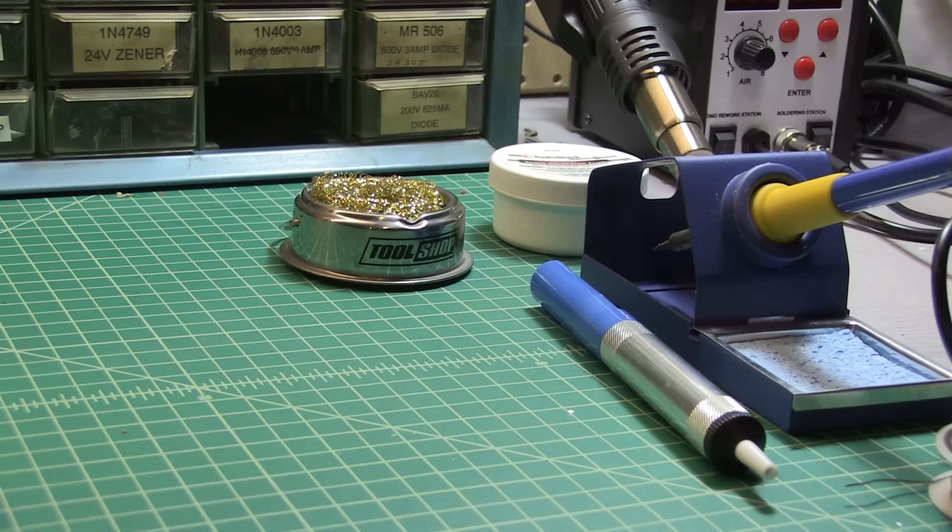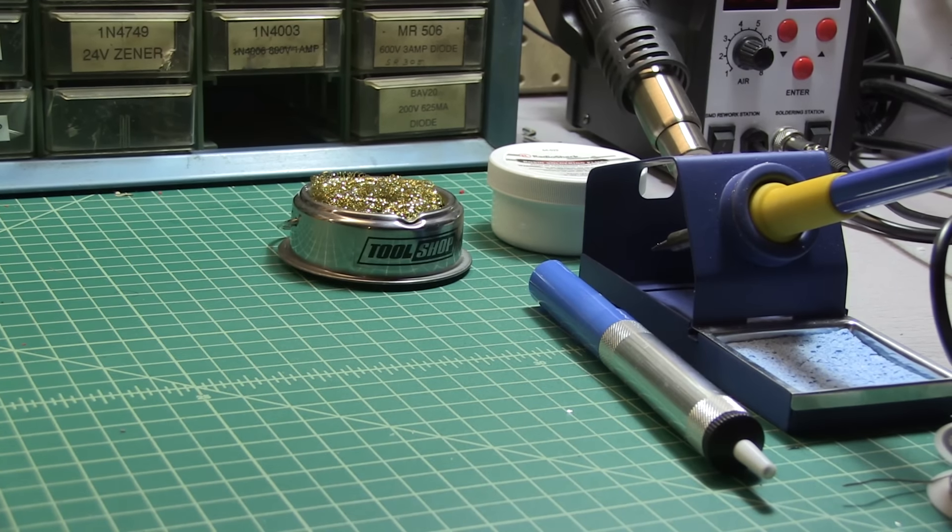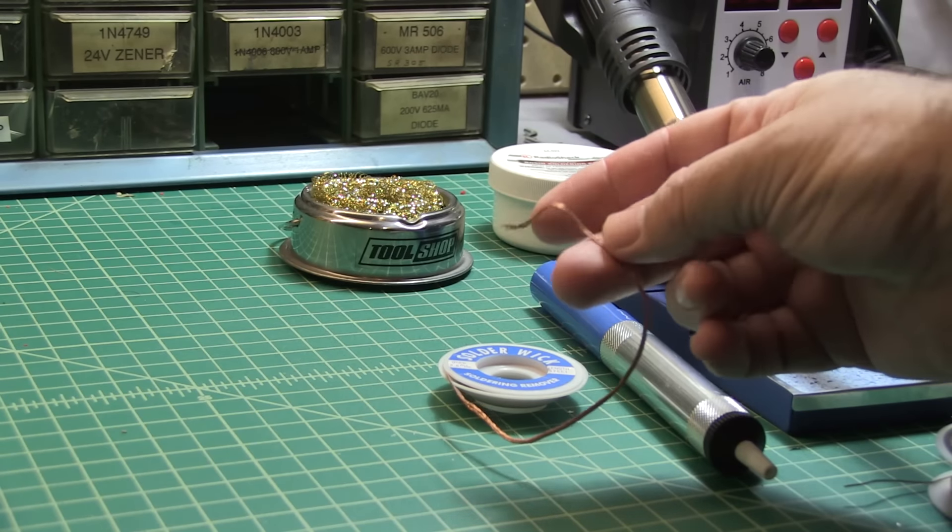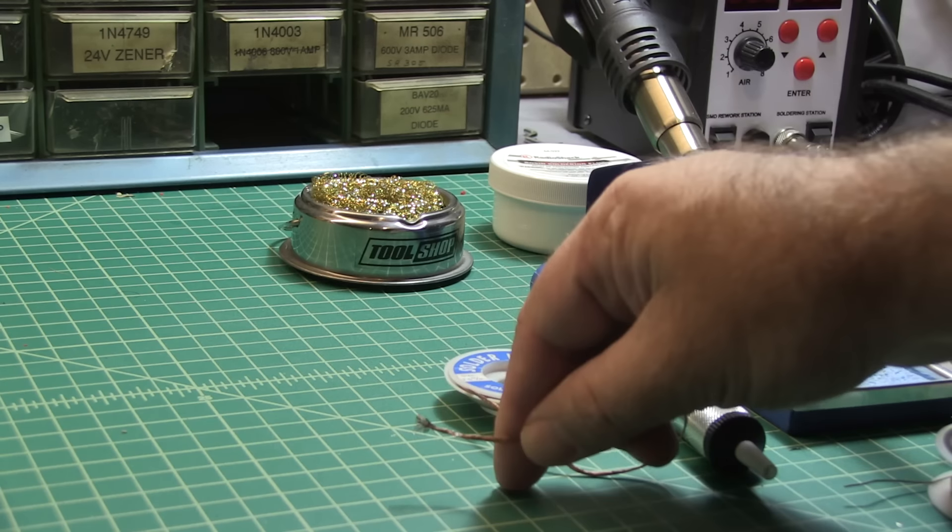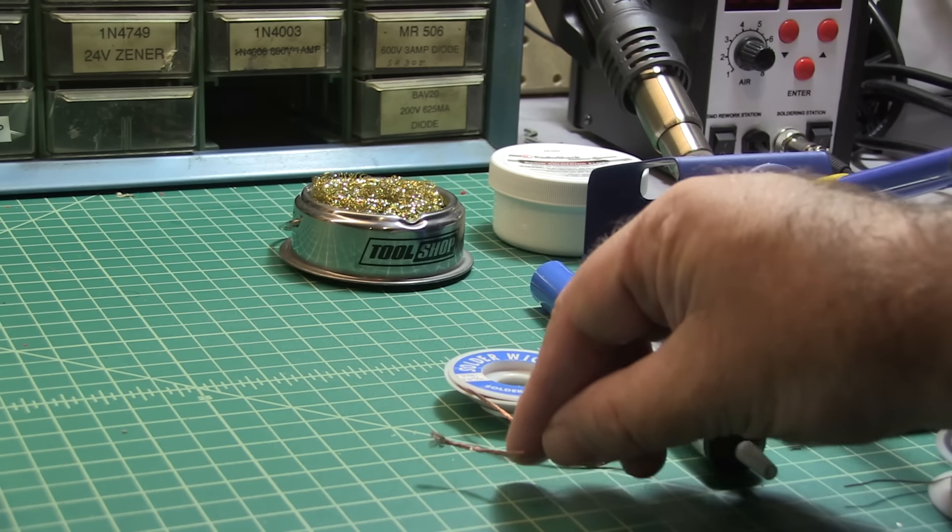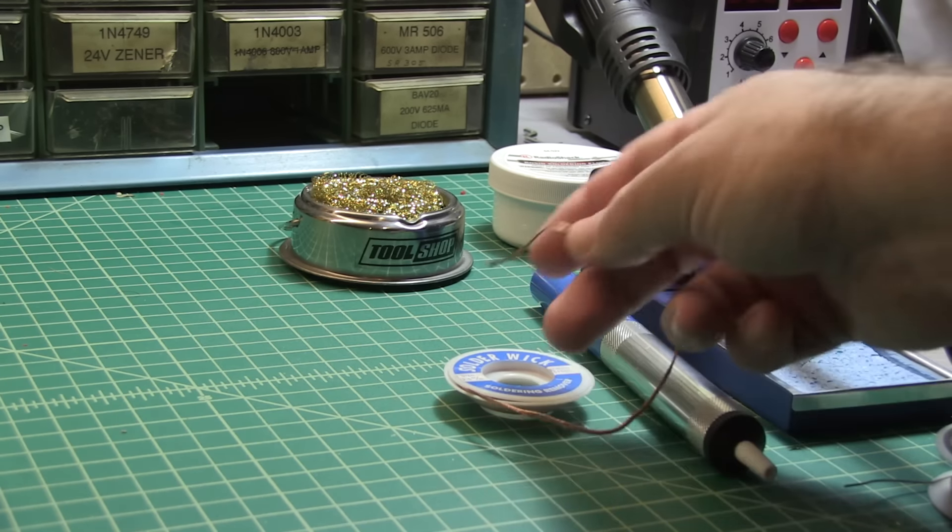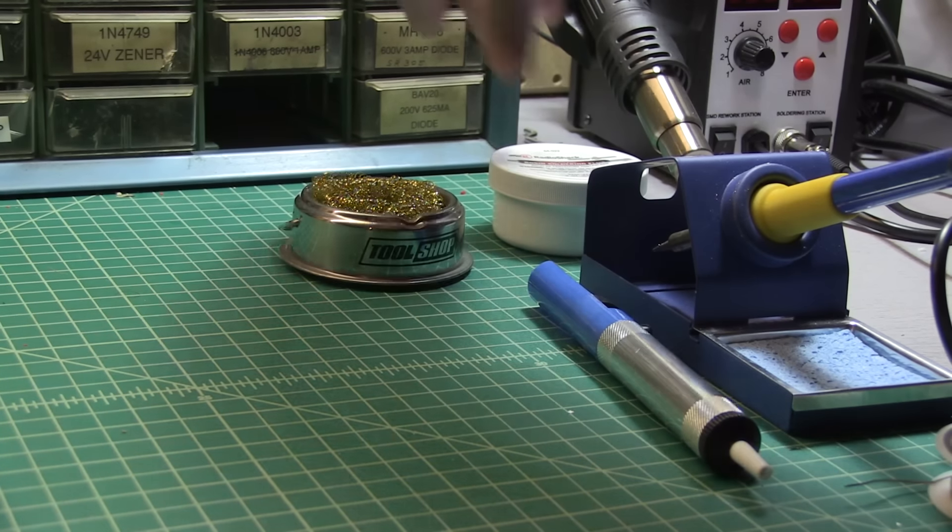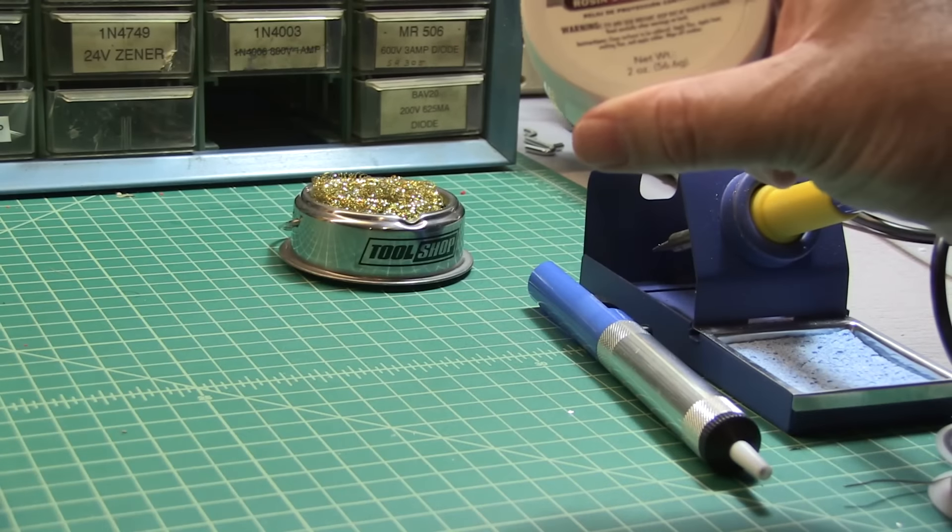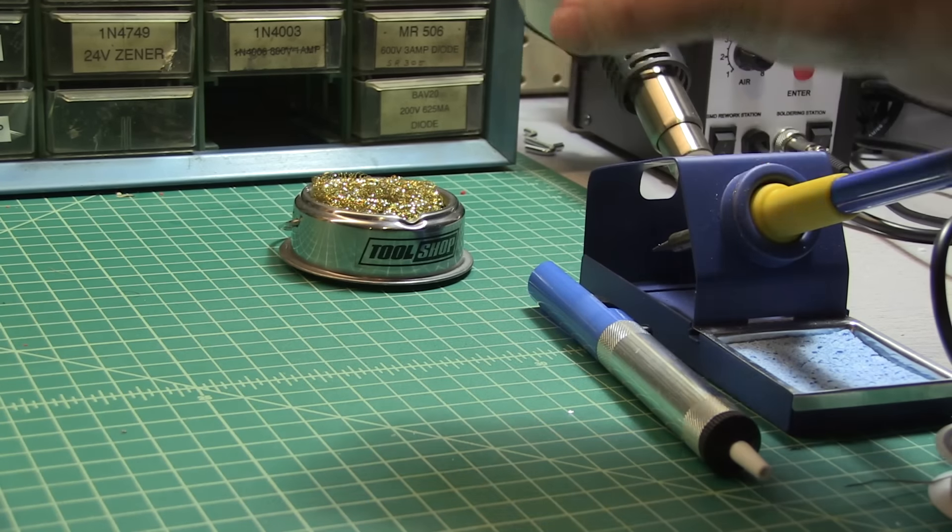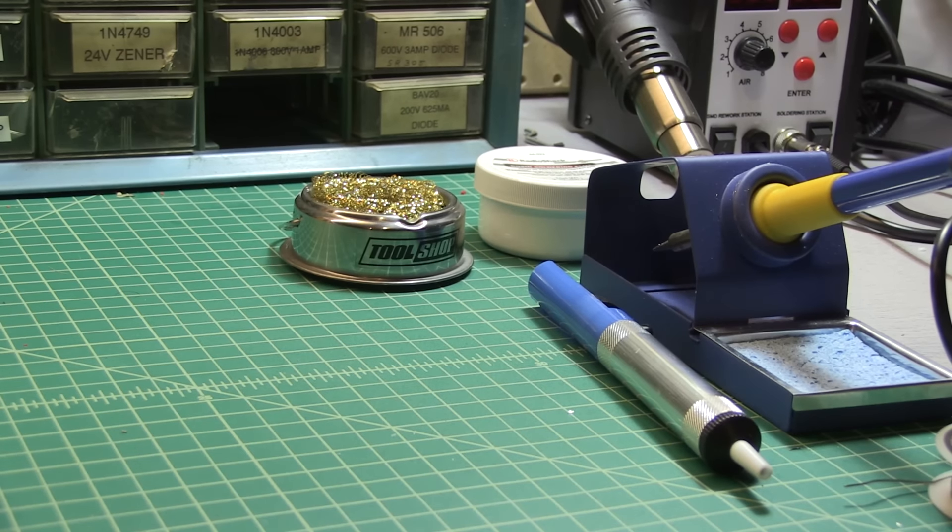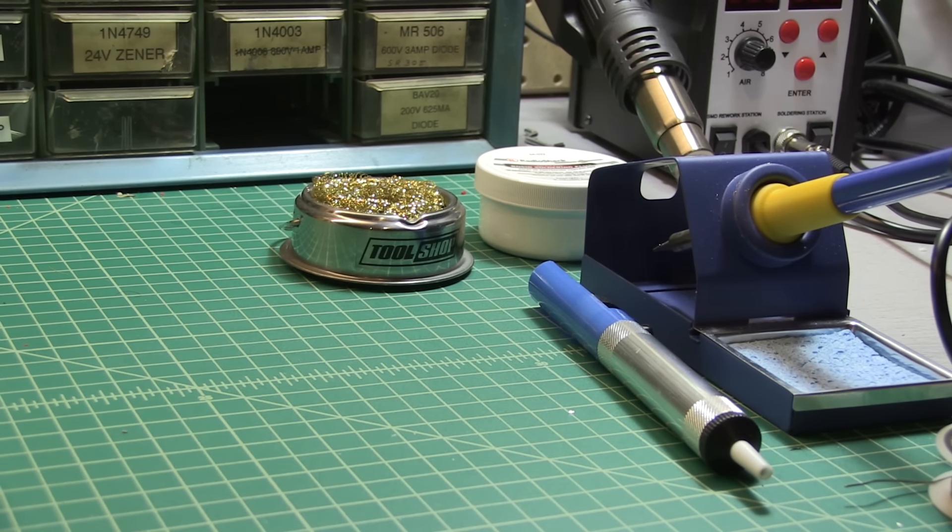Some people use the solder wick as well, which I have and I use. This kind of works similarly, but instead of using air, you're using copper wire. You put the copper wire down and heat and it draws the solder into it. It's also useful when you're desoldering or even when you're soldering to use a rosin solder flux. So that allows you to kind of control where the heat's going. And it helps just make sure that you get a nice quick bond when you're soldering.